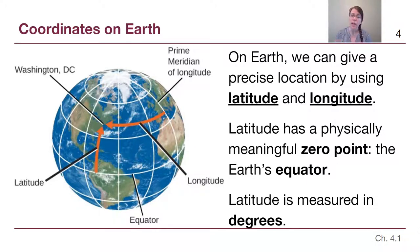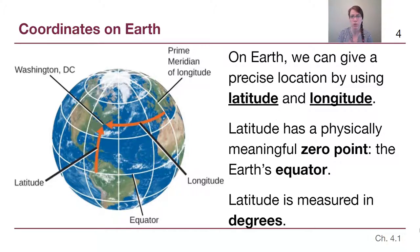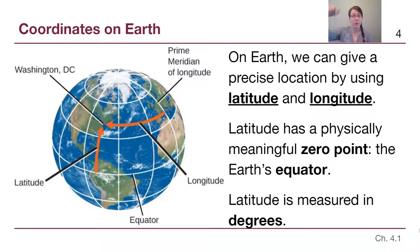On Earth, latitude has a physically meaningful zero point — the Earth's equator. As the Earth spins on its axis along the north and south poles, the equator is perfectly in between those two points. Even if we erased all of the continents and oceans, we'd still be able to draw where the Earth's equator is. Latitude tells us how far north or south of Earth's equator we are. The north pole is at 90 degrees north, and the south pole is at 90 degrees south.